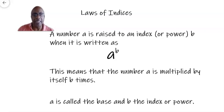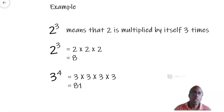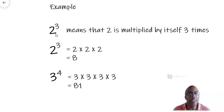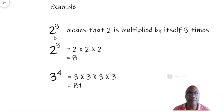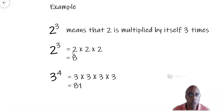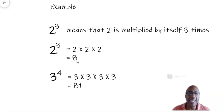Let's look further at this. For example, 2 to the power of 3, or 2 cubed: 2 is the base, 3 is the index. It means you are multiplying 2 by itself 3 times. In other words, 2 cubed equals 2 times 2 times 2, and when you multiply this you will get 8.